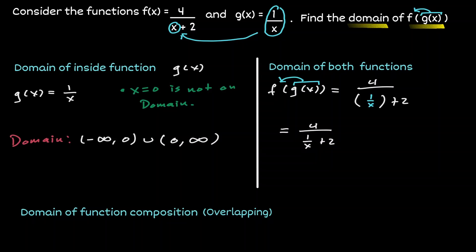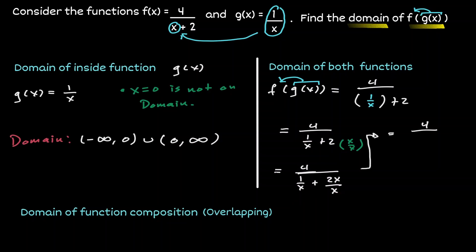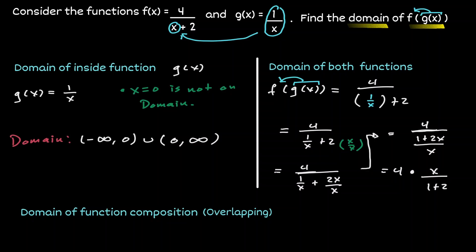Notice that one fraction has denominator x, so let's make the second term also have denominator x by multiplying by x over x. Now both terms in the denominator share a denominator of x and we can combine them. We are now dividing by a whole fraction, so instead let's take the numerator 4 and multiply by the reciprocal of the denominator fraction, which gives x on the numerator and 1 plus 2x on the denominator. Performing that multiplication, we obtain 4x on the numerator and 1 plus 2x on the denominator.